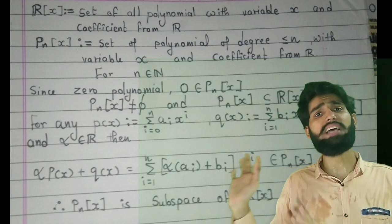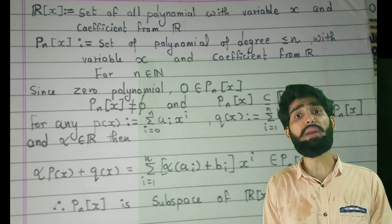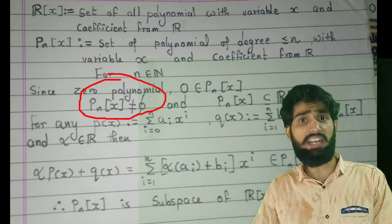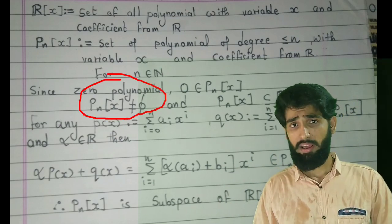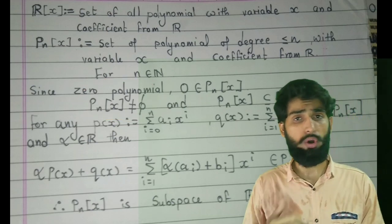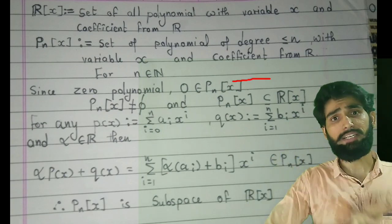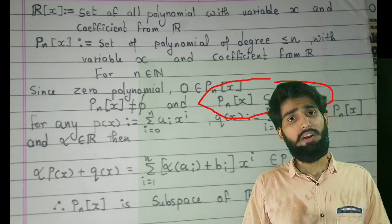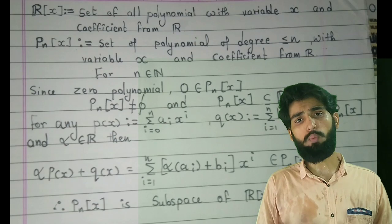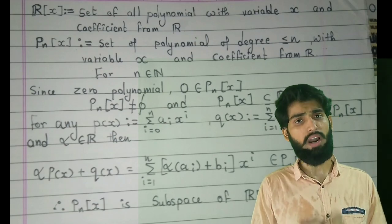We have defined it in such a manner that 0 is an element of it. So we know that the 0 polynomial is there inside it, hence the given set P_n[x] is non-empty for any natural number n. Also it contains polynomial, hence it is subset also. We know it is non-empty subset.